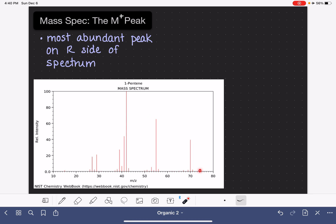We are looking for, of the peaks that are on the right hand side, which one is the most abundant. So for this particular spectrum, which is 1-pentene from the NIST database, this right here is our M plus peak.